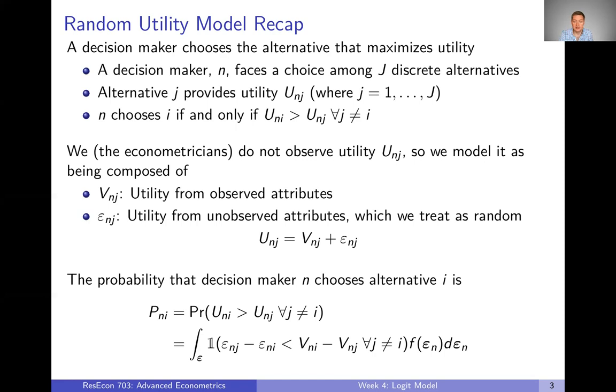The probability that decision maker N chooses alternative I is just the probability that utility from I is greater than J for all J not equal to I. We've worked through some math to show that ultimately it gets us to this multi-dimensional integral where we have to integrate over the joint density of all of the random utility terms for a given decision maker.